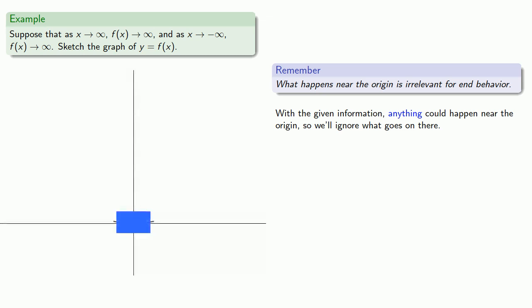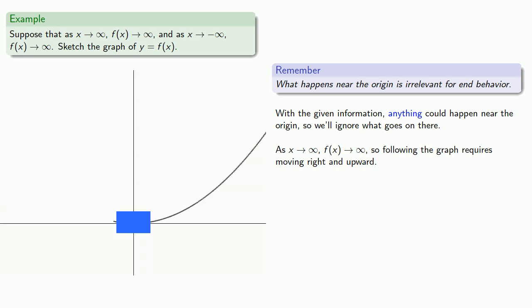As x goes to infinity, f of x goes to infinity, so following the graph requires moving right and upward. And as x goes to minus infinity, f of x goes to infinity, so following the graph requires moving left and upward.